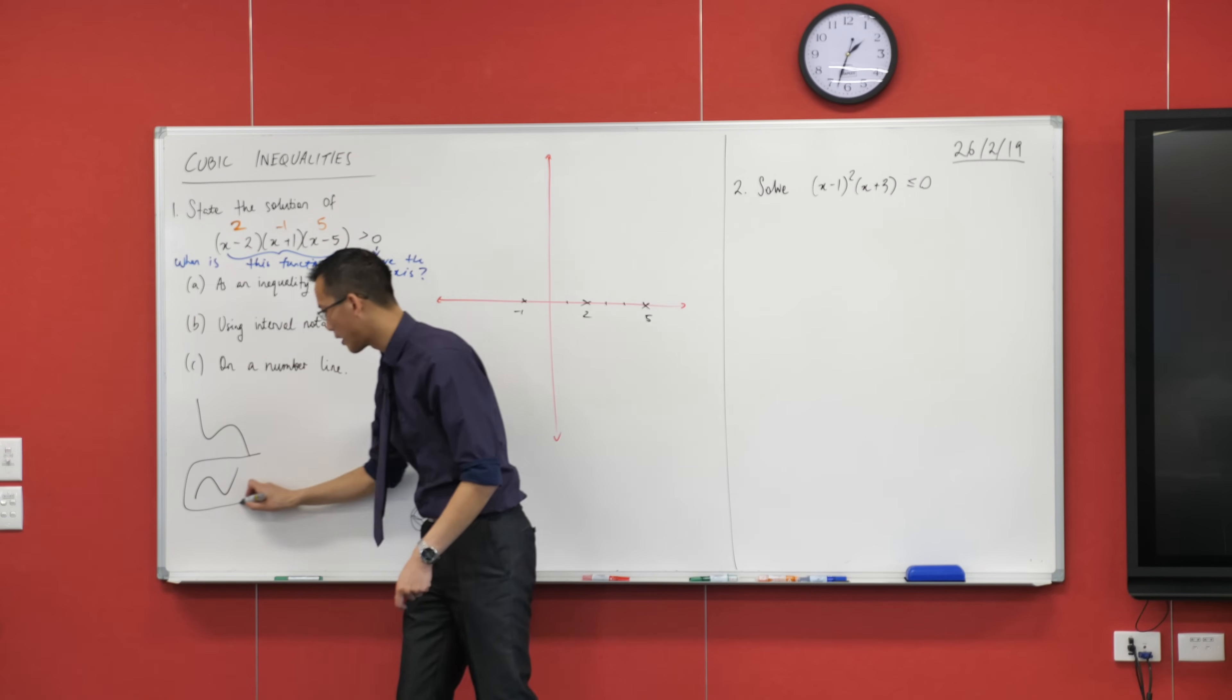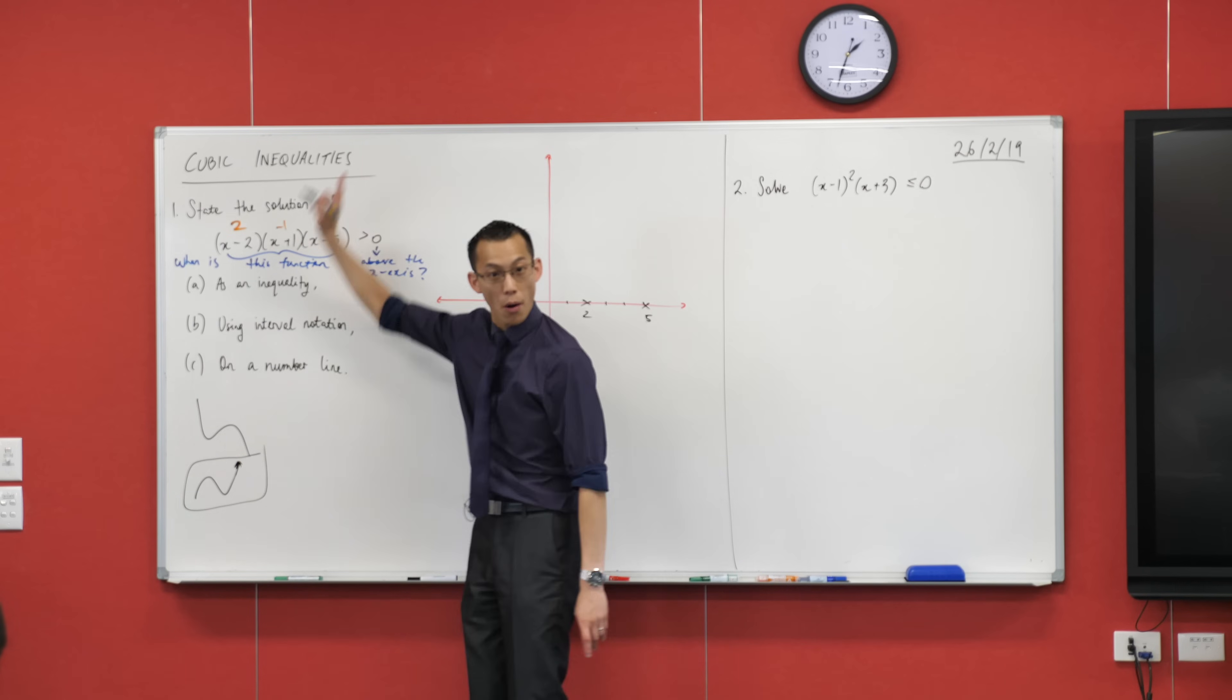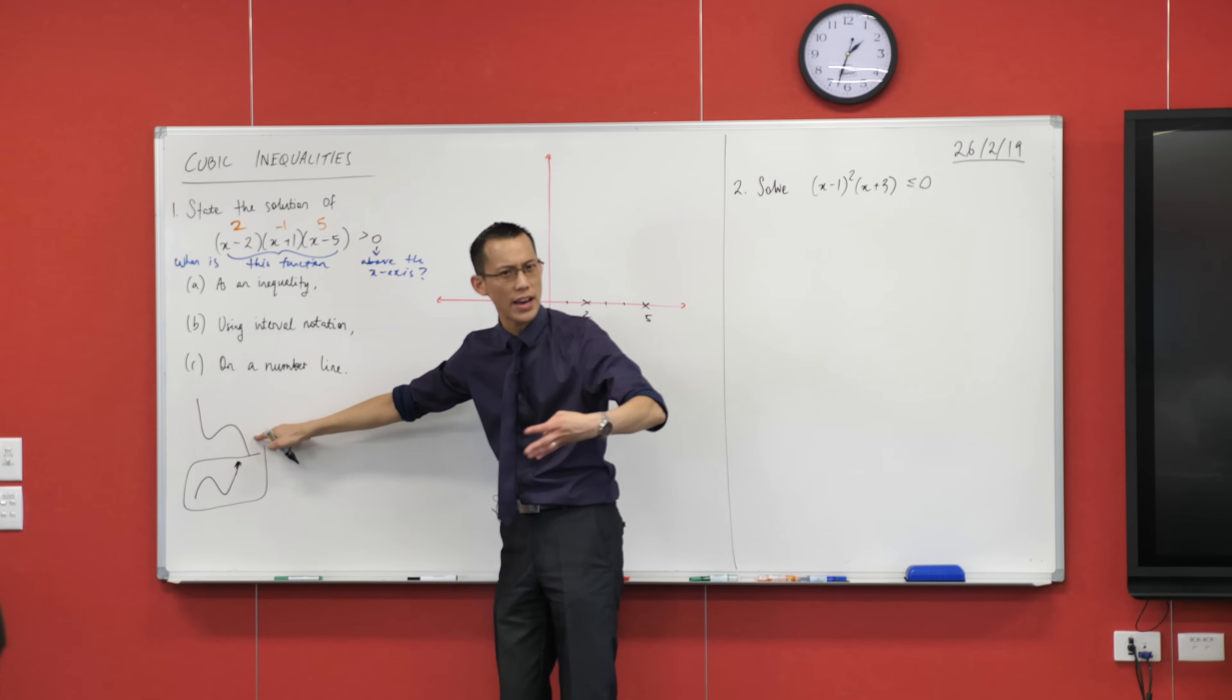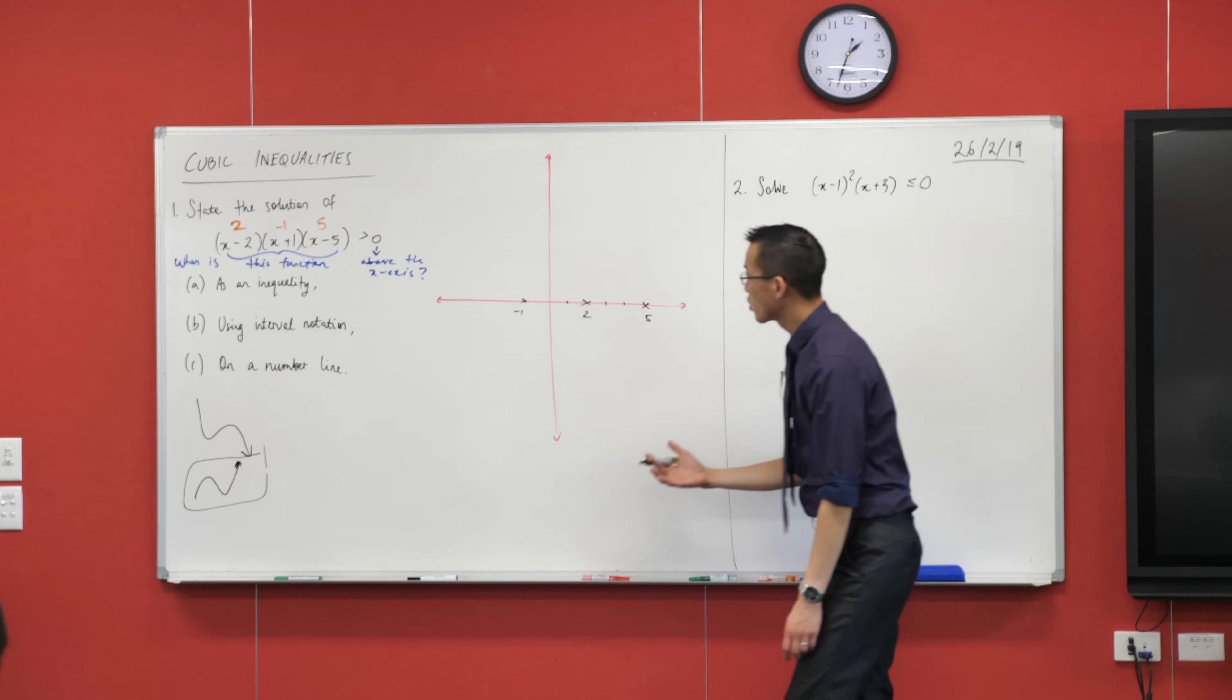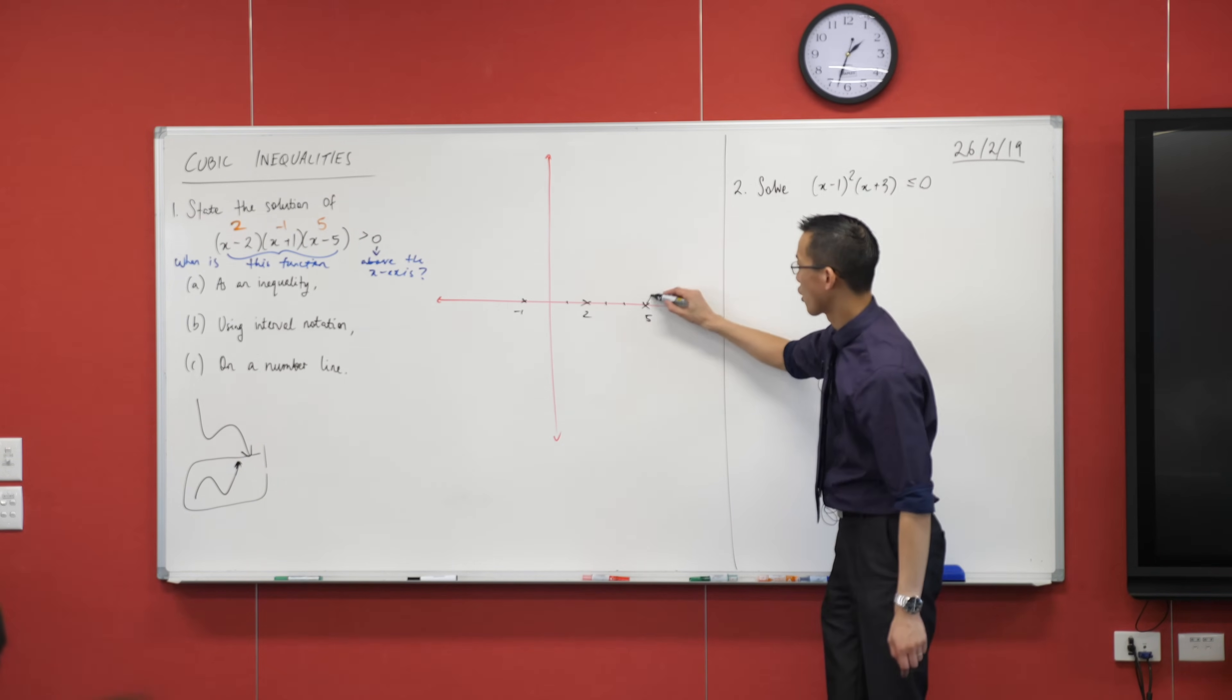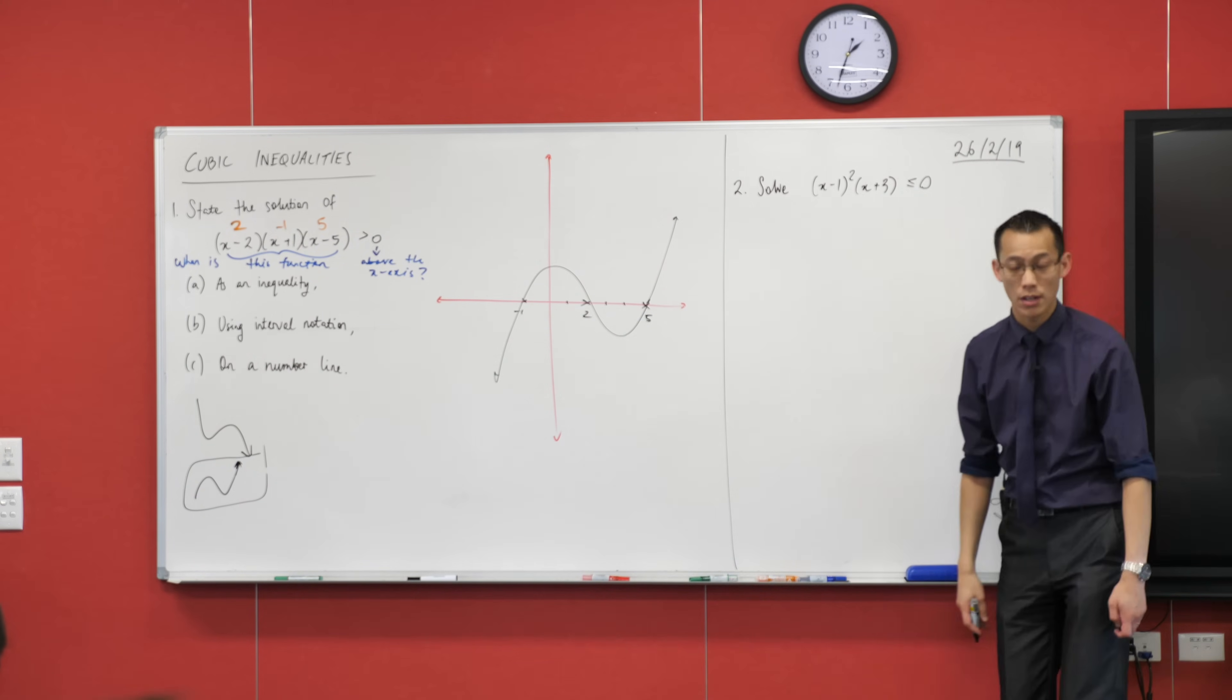That means you're going to get this guy here. Because as you get bigger and bigger values of x, it's going to get more and more positive. Do you see that? As opposed to this guy here, as you get bigger and bigger values of x, does it get more positive? No, bingo. It goes even more negative. So this is negative x-cubed, this is positive x-cubed. So I pretty much know all I need to know to now get a rough graph through here. It's going to go up. And then it's just going to kind of weave its way around like this.